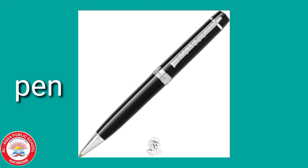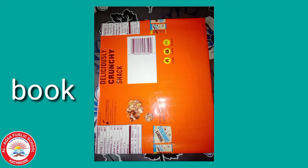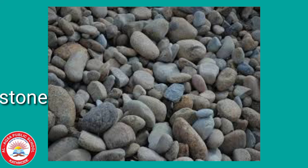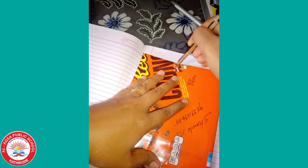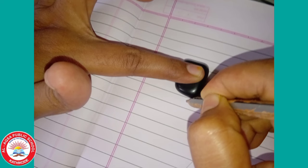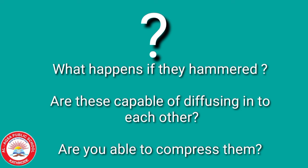First we can study solid. Collect the following articles: a pen, a book and a piece of stone. Then sketch the shape of the above particles in your notebook by moving a pencil around them. Do all of these have a definite shape, distinct boundaries and a fixed volume? Can you say the answers to these questions?